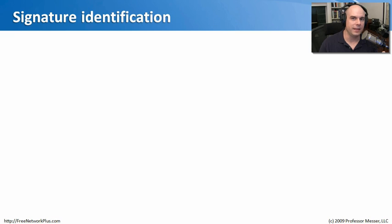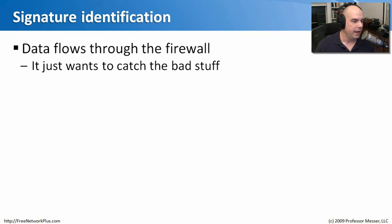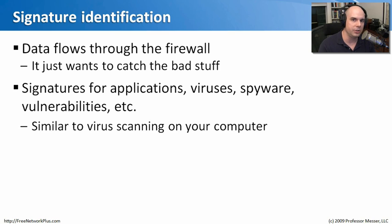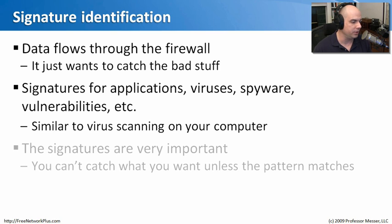Most modern firewalls use signatures to identify traffic going through the network. As data flows through, they look inside packets to capture bad information going back and forth. This signature identification is very common — you have signatures in your antivirus software on your machine looking for viruses, and it works the same way on a firewall. They look for viruses, spyware, and vulnerabilities, and can run IPS signatures — almost identical to the process on your computer.